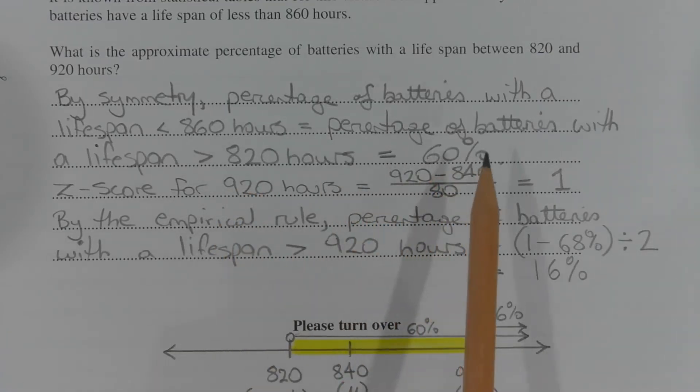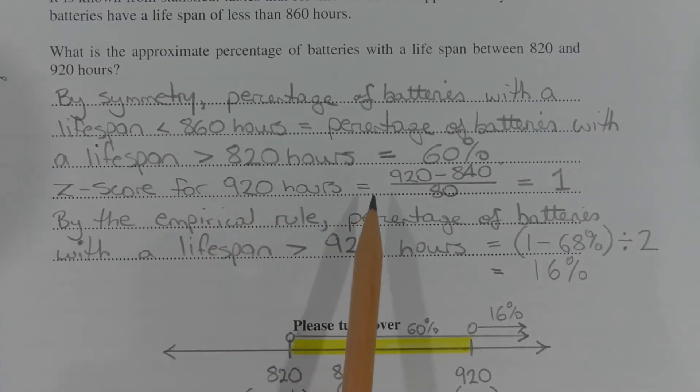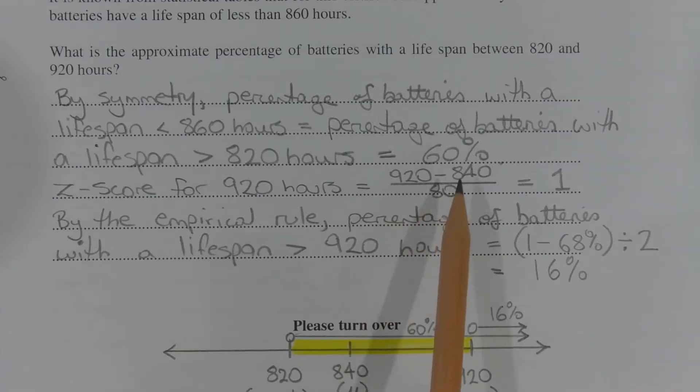Now the Z-score that corresponds to 920 hours is given by the Z-score formula, which is 920 minus the mean of 840 over the standard deviation of 80, and that equals 1.